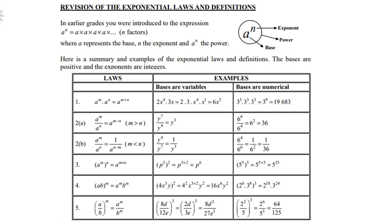For example, 2x to the power 4 times 3x gives you 6x to the power 5, since x to the power 4 times x to the power 1 is x to the power 5. Using numbers: 3 to the power 3 times 3 to the power 3 times 3 to the power 3 gives 3 to the power 9, which is 19,683.